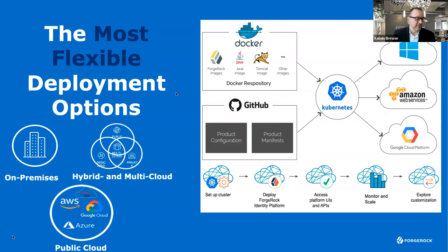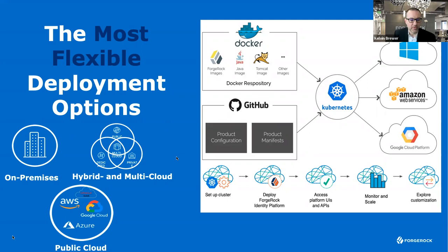We are deployed most in the federal government into virtual private clouds in GovCloud. We have stuff running in IL5 and IL6 type environments, and that can be deployed either with traditional installers or — as George talked about with ForgeOps — it can be deployed with pre-built Kubernetes scripts in a containerized model. It can be deployed to any cloud: we have workloads running in AWS, Azure, Google Cloud, and Oracle Cloud. As long as it's Kubernetes compliant, you can deploy the product over DevOps. It's fully extensible and allows you to scale the way you would a cloud deployment.